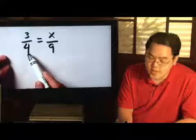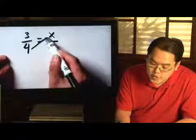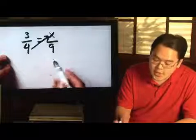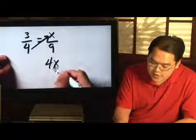You take the denominator of one side and you multiply with the numerator on the other side. So in this case, you have 4 times x, which is 4x.